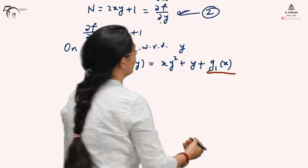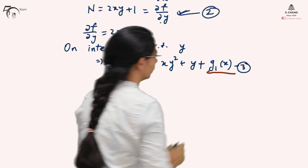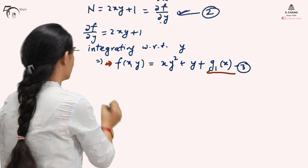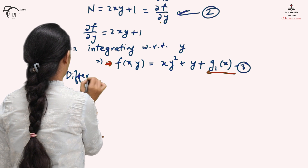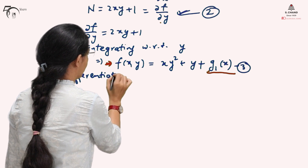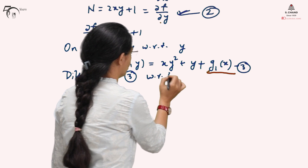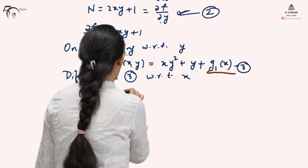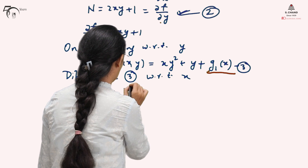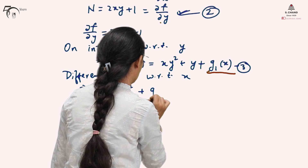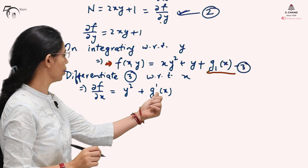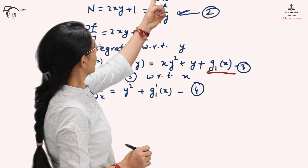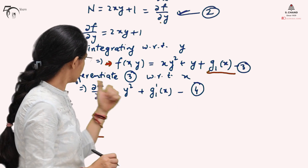So f(x,y) = xy² + y + g₁(x) — let me call this equation (3). We will use equation (1) to find g₁(x). Differentiating equation (3) with respect to x gives ∂f/∂x = y² + g₁'(x) — let me call this equation (4).